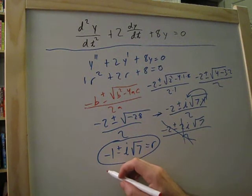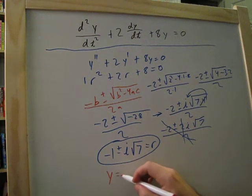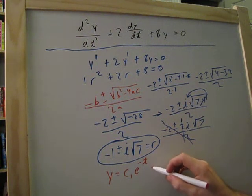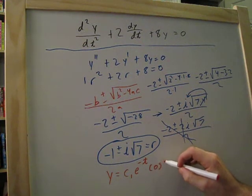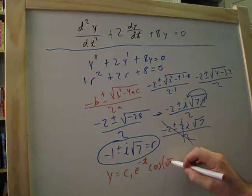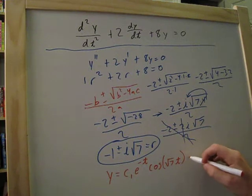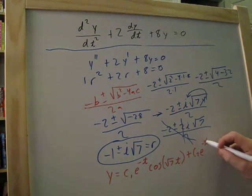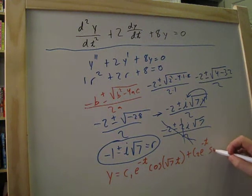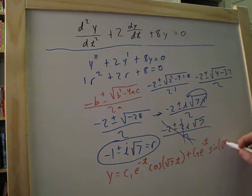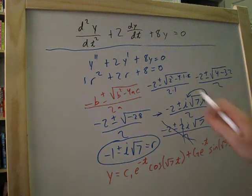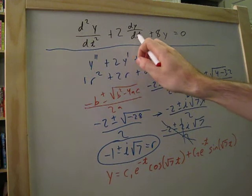All right, so we're going to get y is equal to c1e to the minus t times cosine of the square root of 7t plus c2e to the negative t. And that's sine square root of 7t. And this is all t because this is with respect to t.